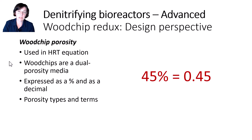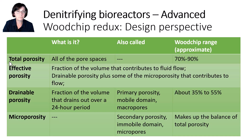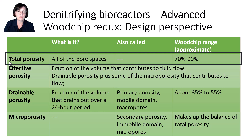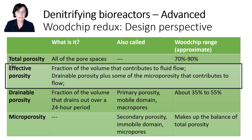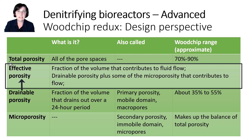Porosity is often talked about as a percent or as a decimal, and there are several types to discuss. Total porosity is the fraction that represents all of the pores, big and small, within a batch of woodchips. This is usually between 70 and 90 percent. Effective porosity is the fraction of the total woodchip volume that contributes to flow, including drainable porosity plus sometimes some of the small microporosity. Drainable porosity is often used as a proxy for effective porosity because effective porosity is rarely known in situ, whereas drainable porosity is relatively easy to measure in the lab.